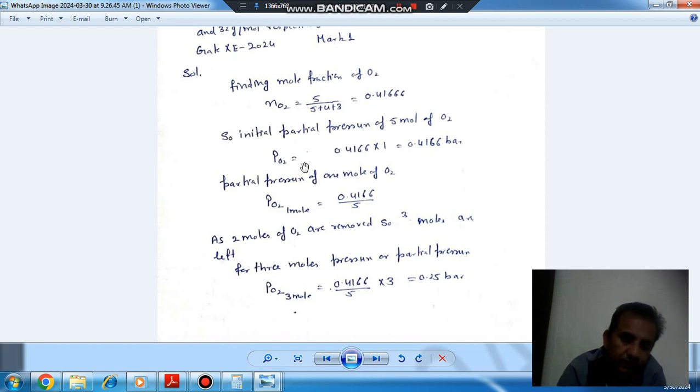And total pressure is 1 bar. So partial pressure of O2 will be 0.41666 bar.